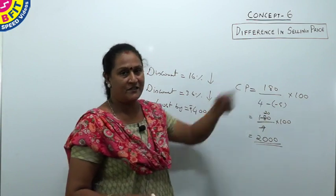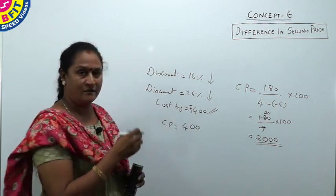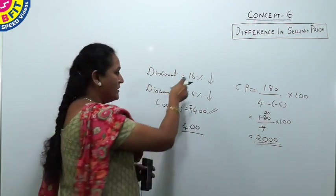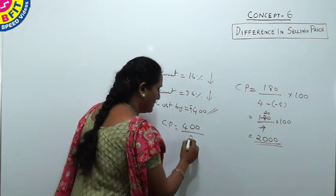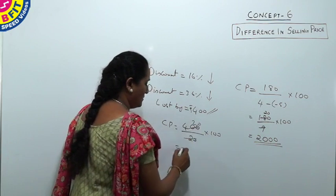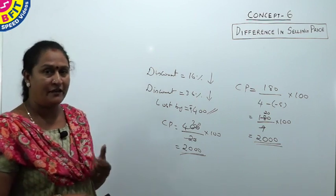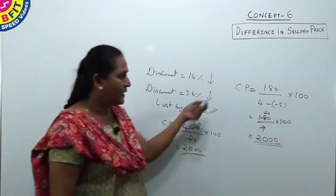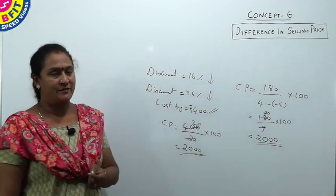So the loss value is the difference in selling price. To find the cost price, write the difference in selling price — which is 400 — divided by the difference in loss percent. Subtract: 36 minus 16 is 20, then multiply by 100. The cost price is again 2000. Whenever the text implies a difference in selling prices, find the cost price directly by dividing the difference in selling price by the difference in profit or loss percent, multiplied by 100.